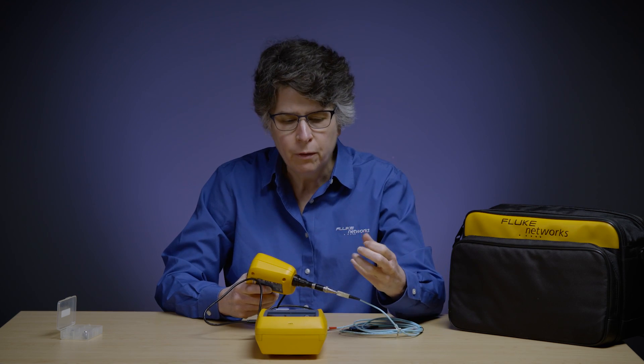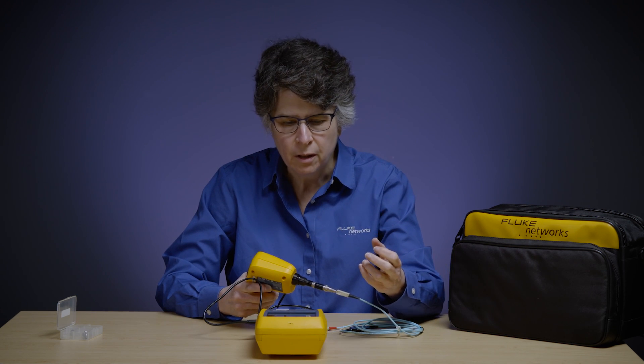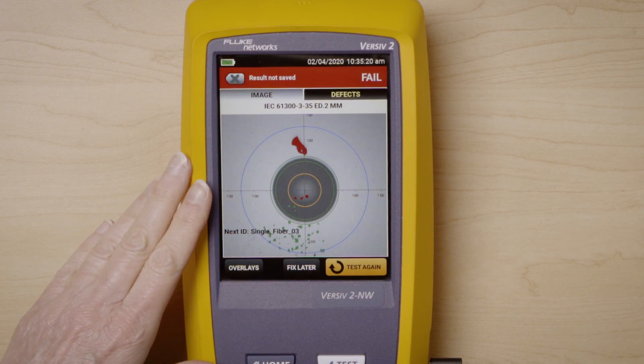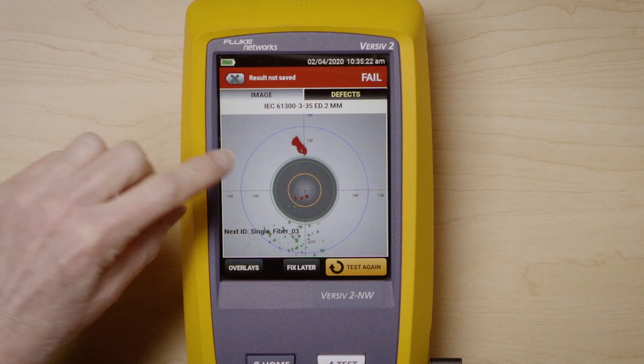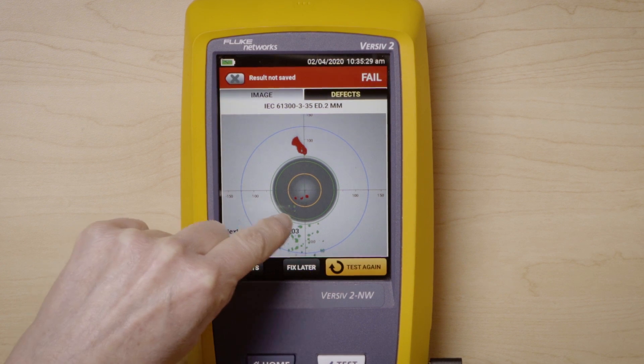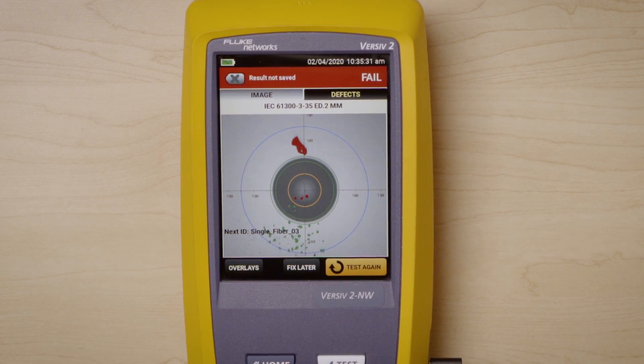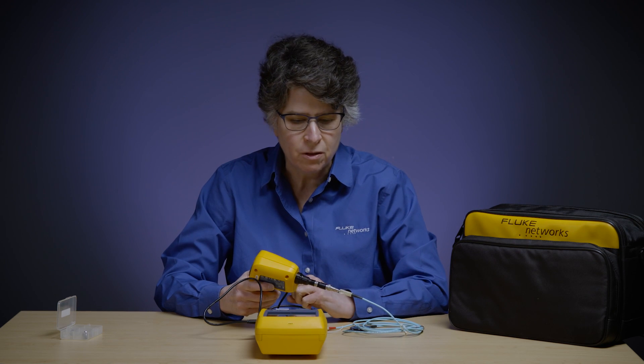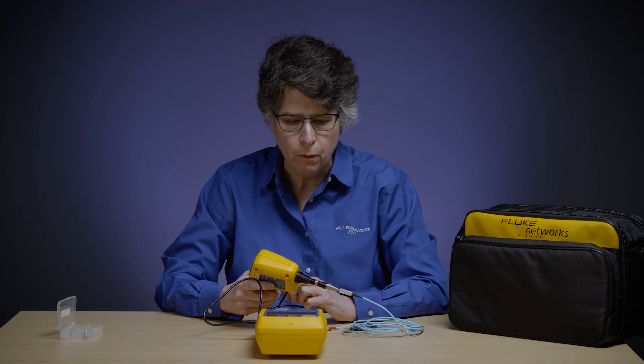Again, it's going to autofocus the camera and then test it. And then once it's done with the test, it's going to send the results from the camera to the Versive. And you can see here that I am failing in multiple ways. I have this big clump of some type of debris. And then more importantly, I have some dirt in the core. That itself means I would have to clean it and go forward.